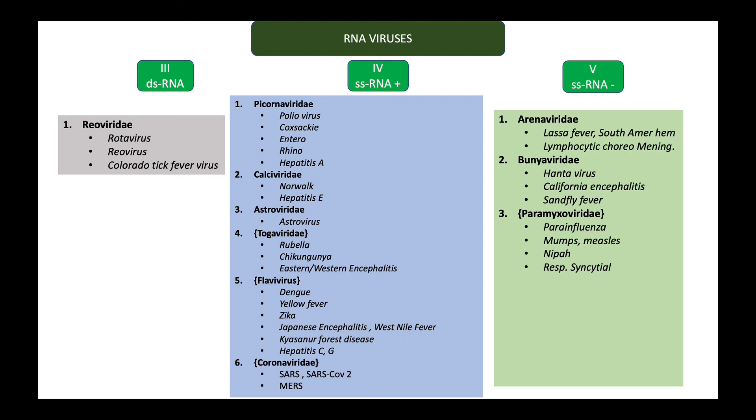The fourth family is the Orthomyxoviridae. This is the influenza family of viruses that also include the avian and swine flu virus.